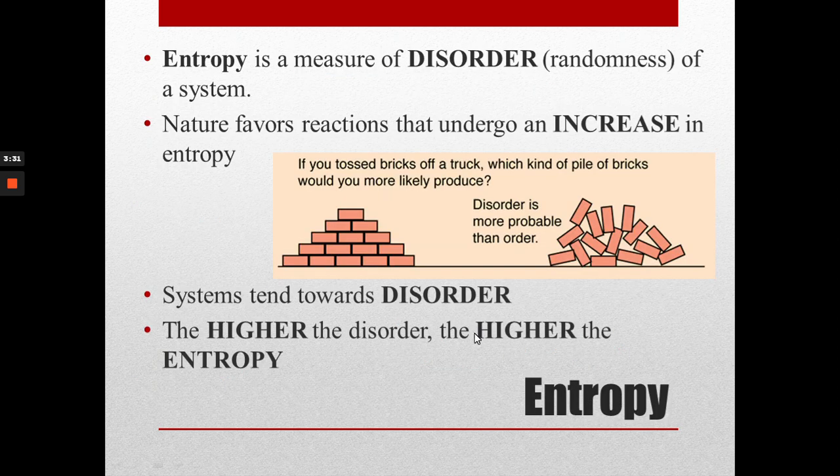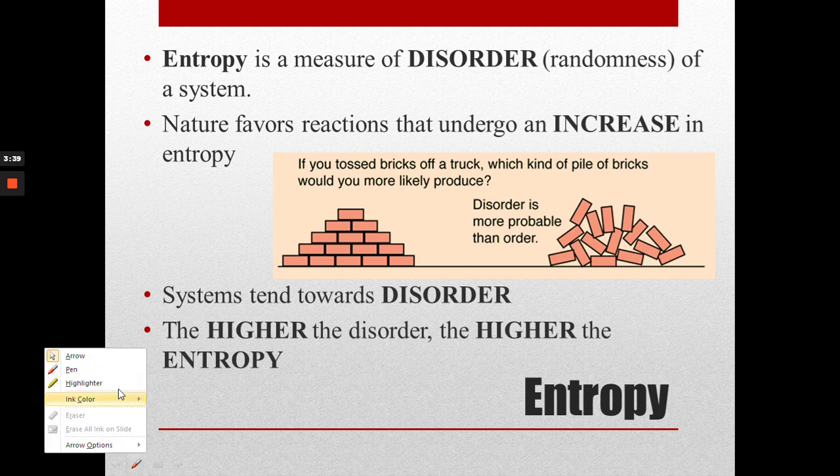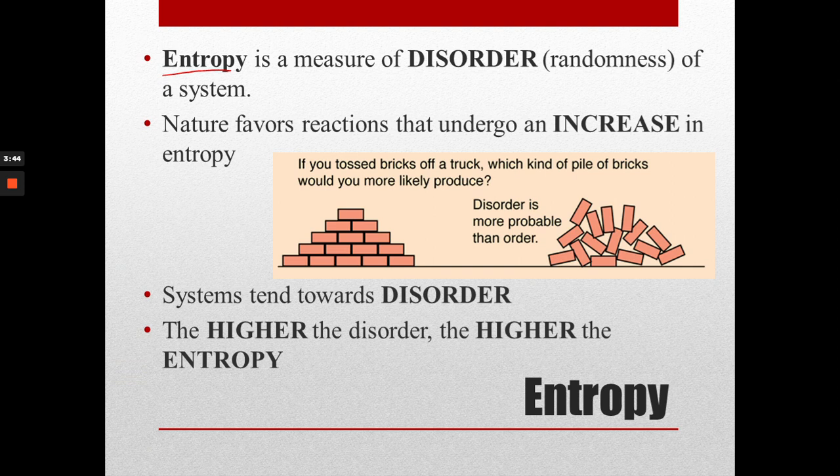So we've just added in a new word, which is entropy. Enthalpy we've been doing for a few days. So entropy, this is the new thing for today that goes with spontaneity. Entropy is a measure of disorder of a system or randomness of a system. Well, nature actually favors reactions that undergo an increase in entropy. So an increase in entropy would be positive, going up. So they favor things becoming more disordered as the reaction goes.